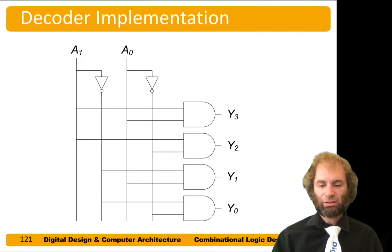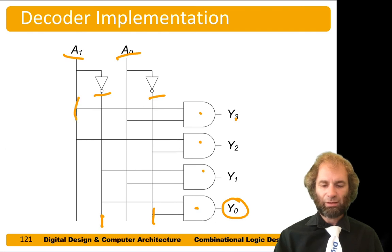Here's an implementation. This is just a bunch of AND gates where the output is true based on the AND of the variables and their complements. So y0 is true on a1 bar and a0 bar. Y3 is true if a1 and a0 are true.